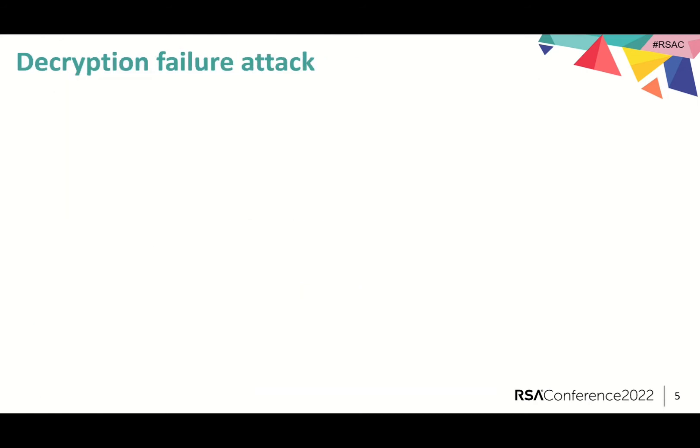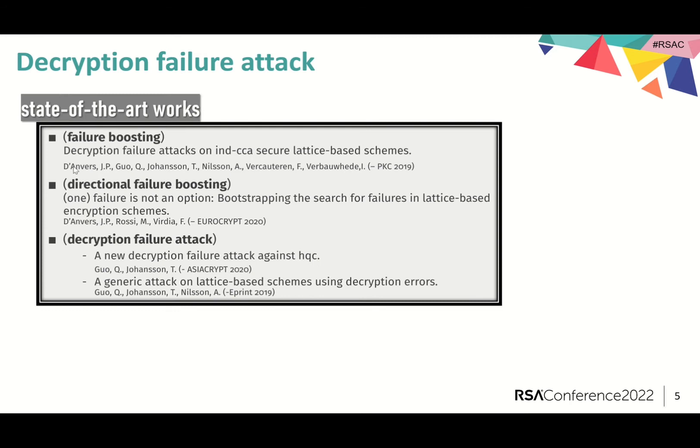In 2018, the impact of decryption failures was studied for attacking the chosen ciphertext security of Ring/Module LWE/LWR-based primitives by work from D'Anvers et al. They have developed a technique called failure boosting to increase the failure rate by searching for ciphertexts that are of large norm.